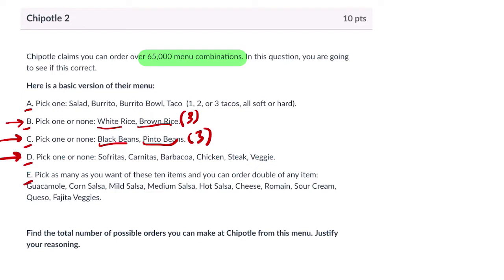Part D says pick one or none. So fritas, carnitas, barbacoa, chicken, steak, veggie. That's one, two, three, four, five, six, and seven for none.